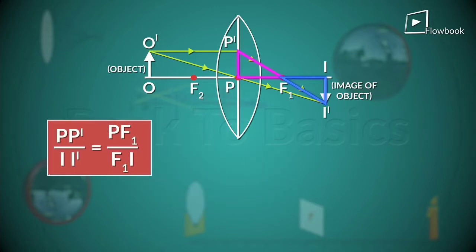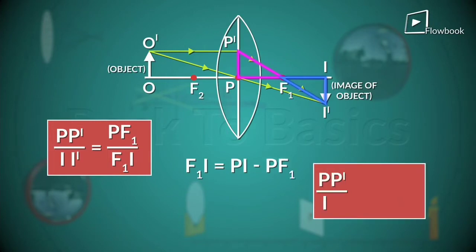Again, from the figure, F1I is nothing but PI minus PF1. Therefore, PP' by I'I' becomes equal to PF1 by PI minus PF1.